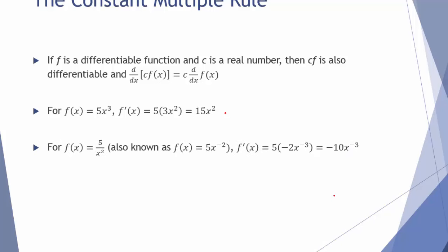For f of x equals 5 over x squared, this is a ratio. We're going to need to rewrite it to apply our power and constant multiple rules. If you rewrite it, you get 5 times x raised to the negative 2. So its derivative will be 5, constant left out, times the derivative of x to the negative 2, which is negative 2x to the negative 3. Multiplying 5 times negative 2 gives negative 10x to the negative 3, which is the same as negative 10 over x cubed.